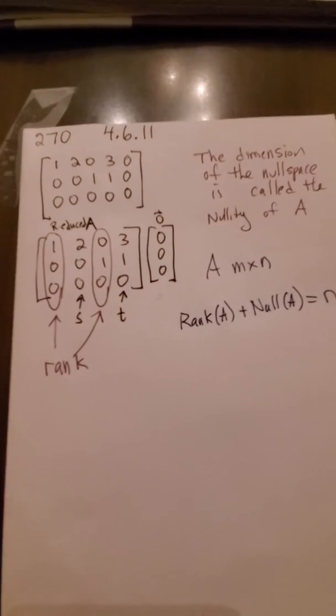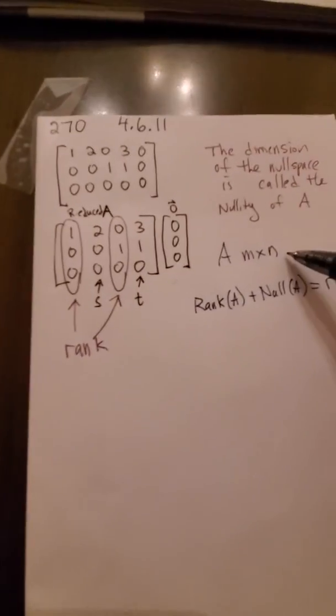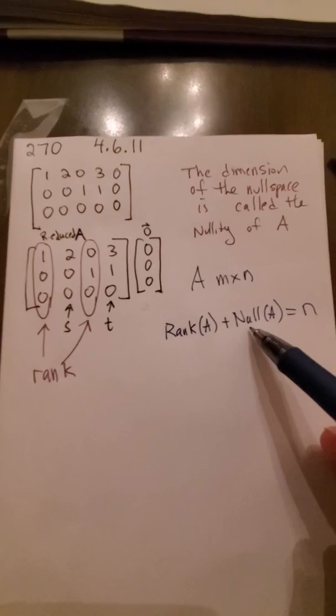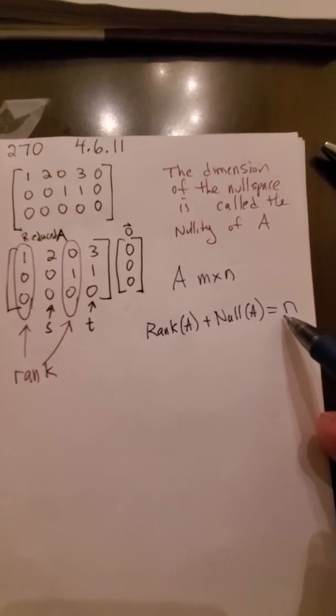It tells us that when A is an n by n matrix, that the rank of A plus the nullity of A is going to equal n, always.